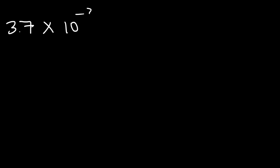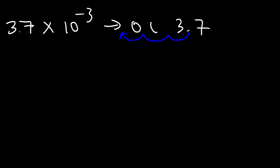Now let's work on some examples with negative exponents. A negative exponent is going to be associated with a small number, so this time we need to move the decimal to the left. Moving three spaces to the left and adding two zeros gives us 0.0037.